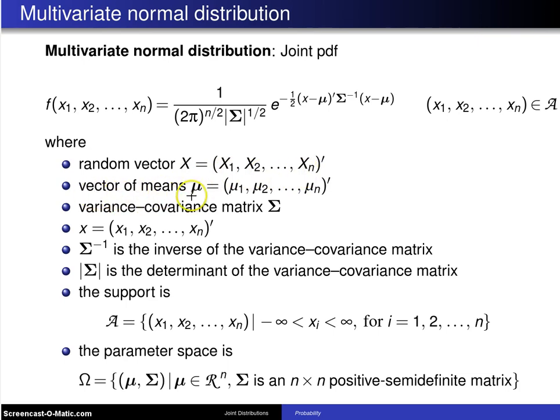The vector of means μ again written as a column vector μ1 up to μn that appears here and here.